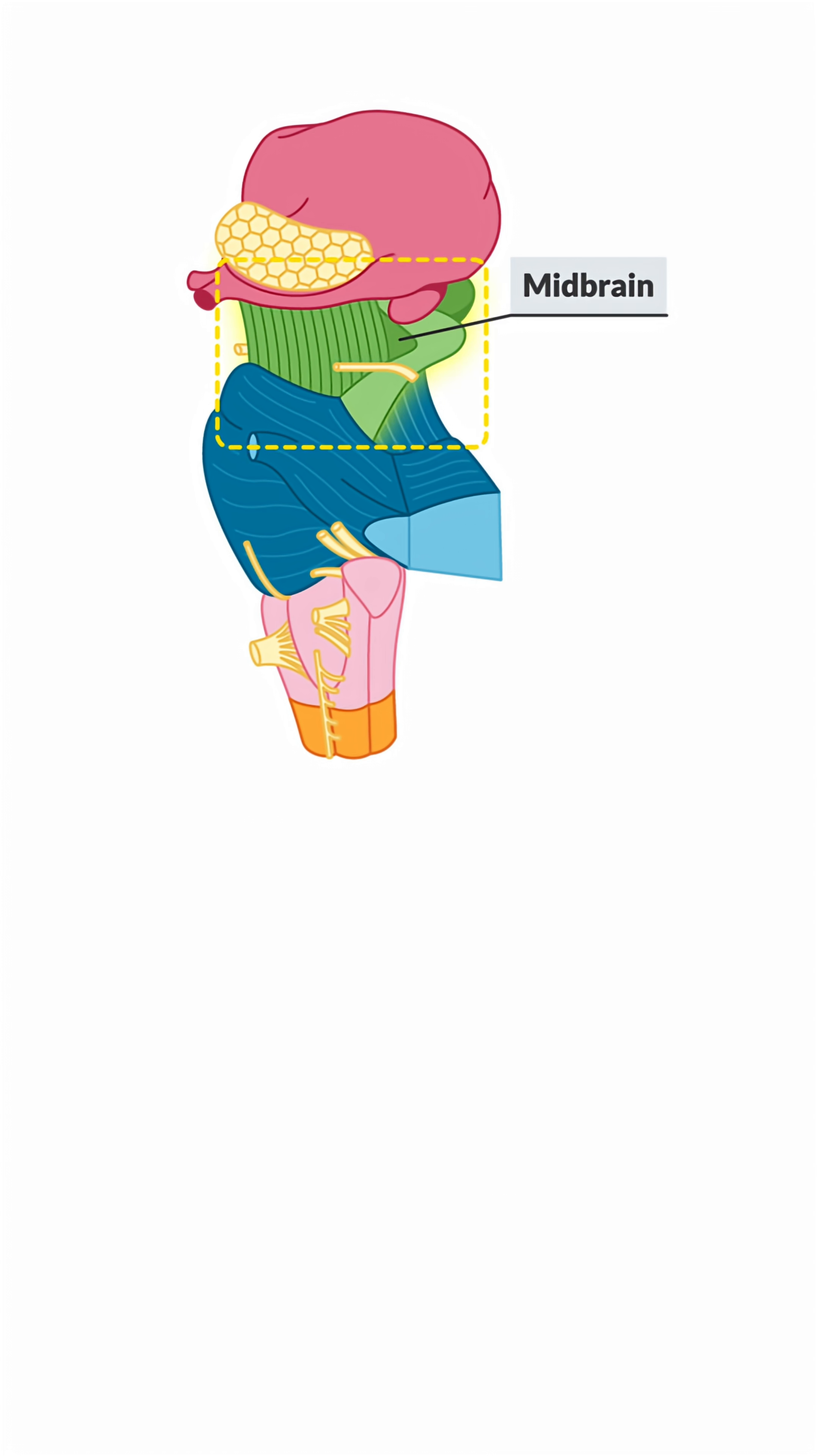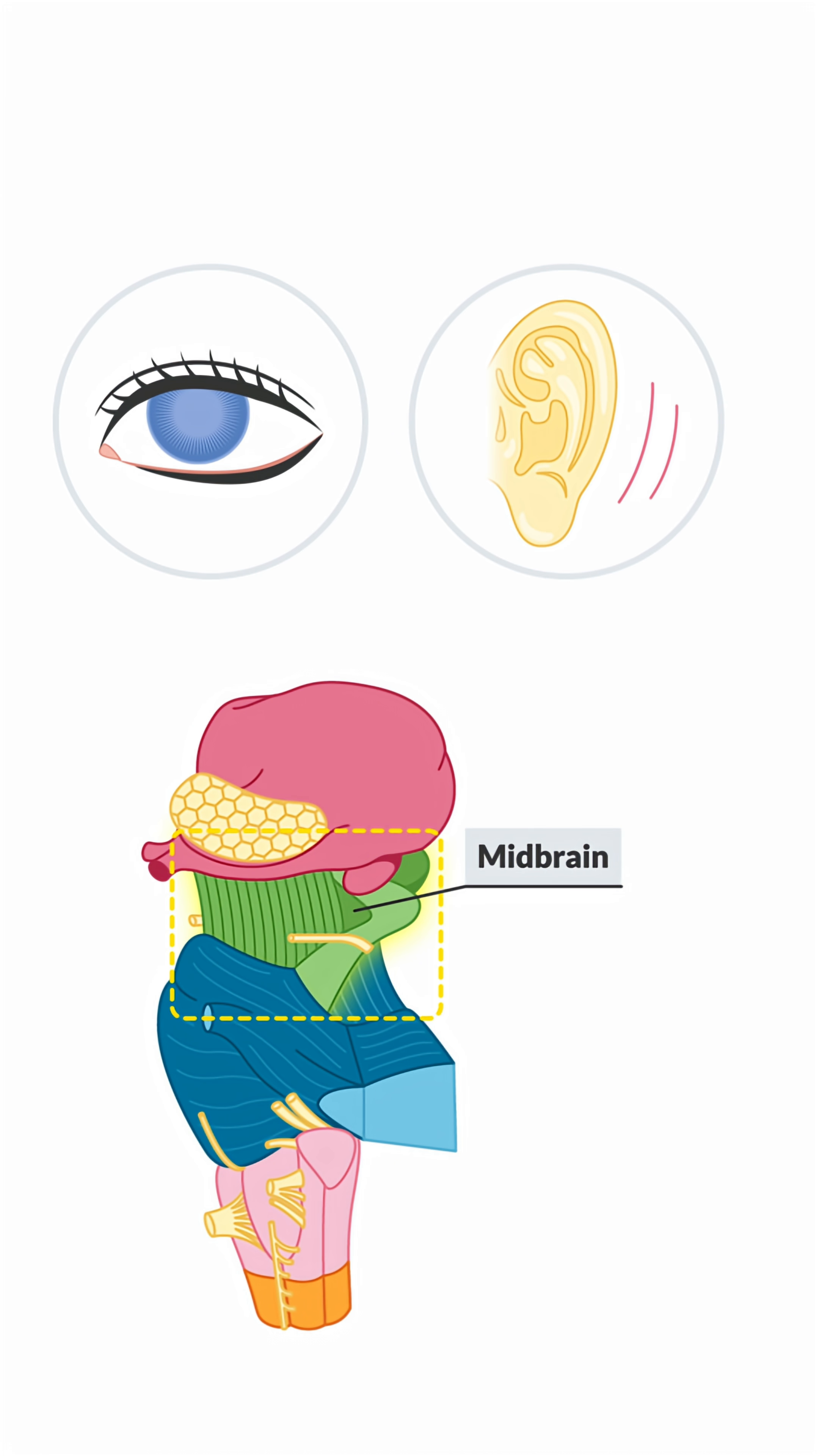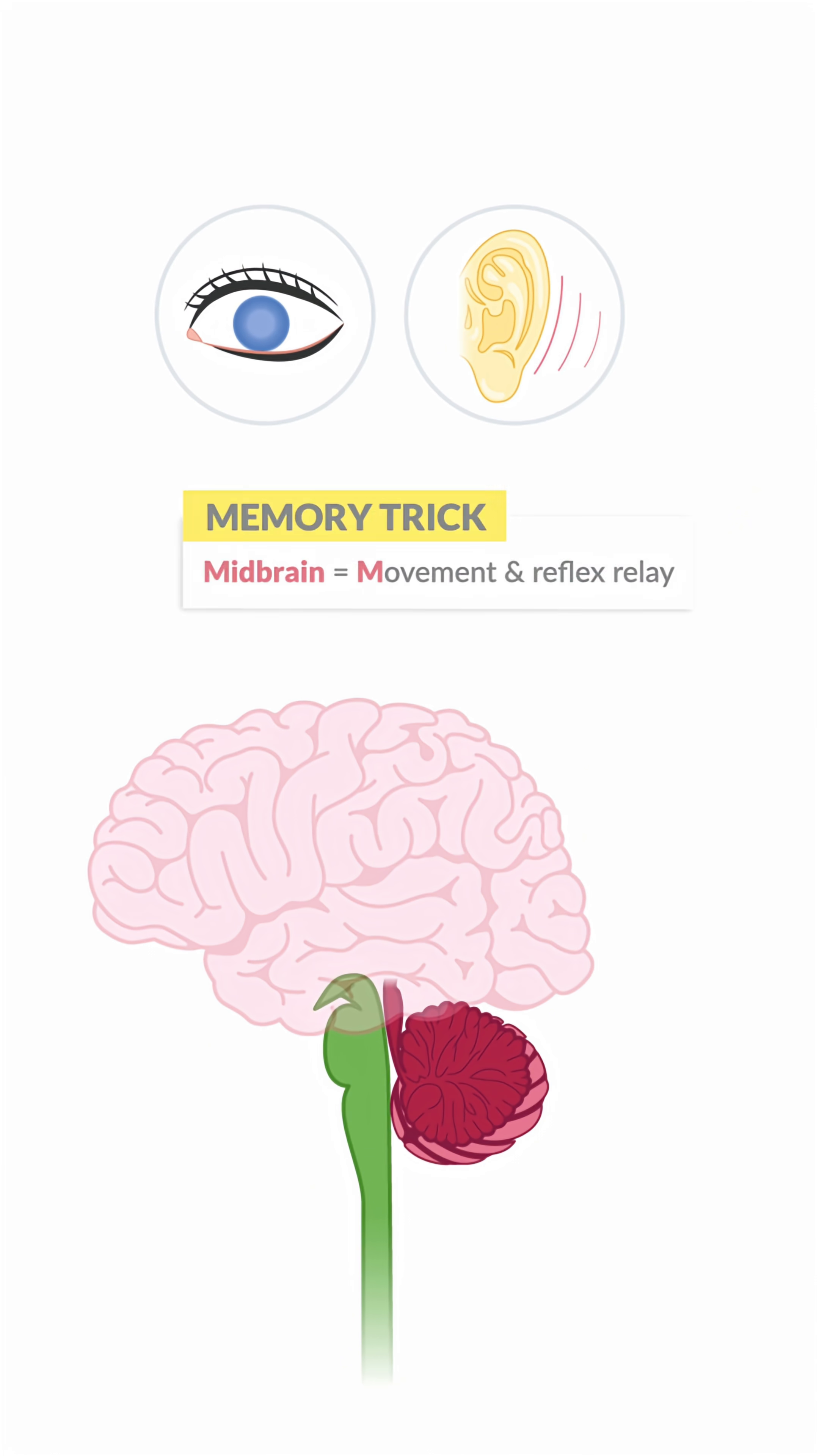The midbrain handles reflexes for vision and hearing, kind of like tracking a moving object or flinching at a loud noise. This is one of the first reflexes we learn as a newborn baby. It also helps to relay signals from the brain down to the spinal cord.